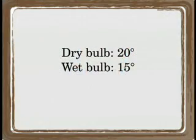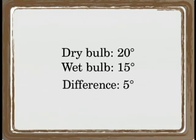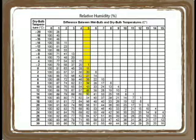Relative humidity is found in the same way as dew point. We'll use the same numbers as before — 20 degrees for the dry bulb temperature and a difference of 5. So you go down the 5 column row and over to 20, and you end up with an answer of 58.